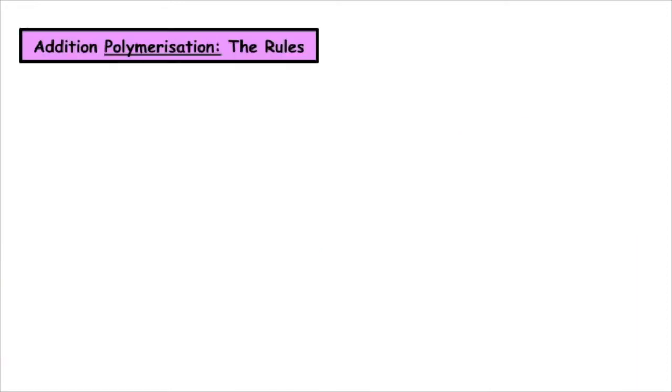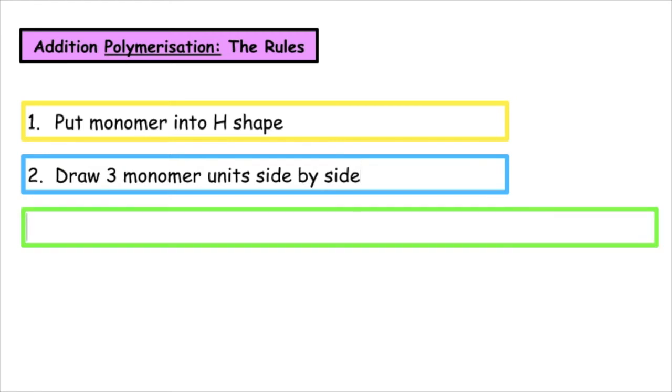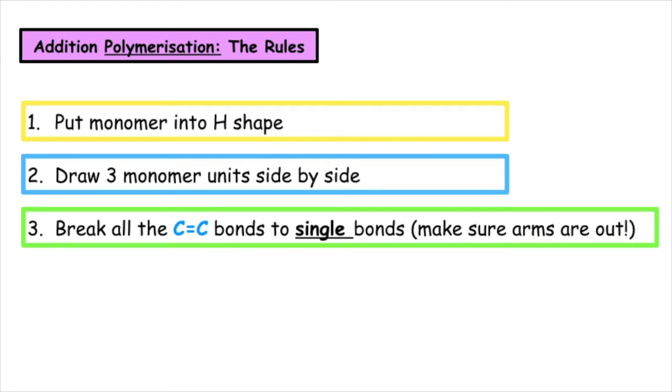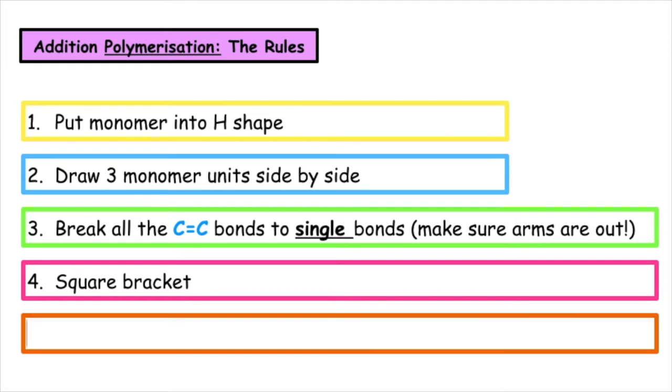So there are a set of rules to be able to successfully do an addition polymerization. Step number one, we want to put the monomer into the H shape. Two, draw three monomer units side by side. Three, break all of the carbon to carbon double bonds to form single bonds, and remember we need to make sure that the arms are out. Four, pop in a square bracket. And five, we put the word poly in front of the monomer name.